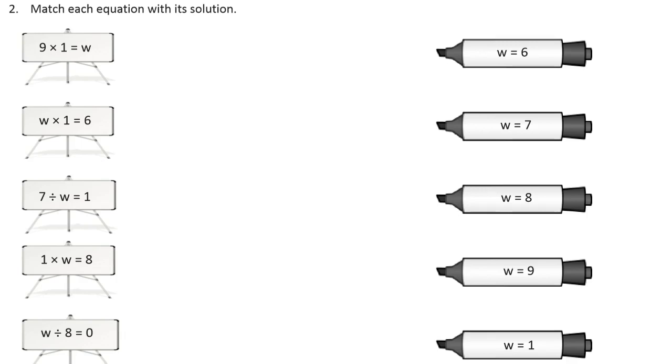So here's 9 times 1 equals W. So W, that's going to be 9 times 1 is 9, right? So we've got to match it up with W equals 9, there.